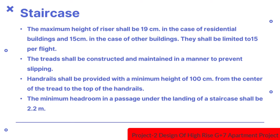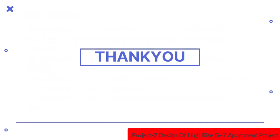Handrails shall be provided with a minimum height of 100cm from the centre of the tread to the top of the handrails. The minimum headroom in a passage under the landing of a staircase shall be 2.2m.